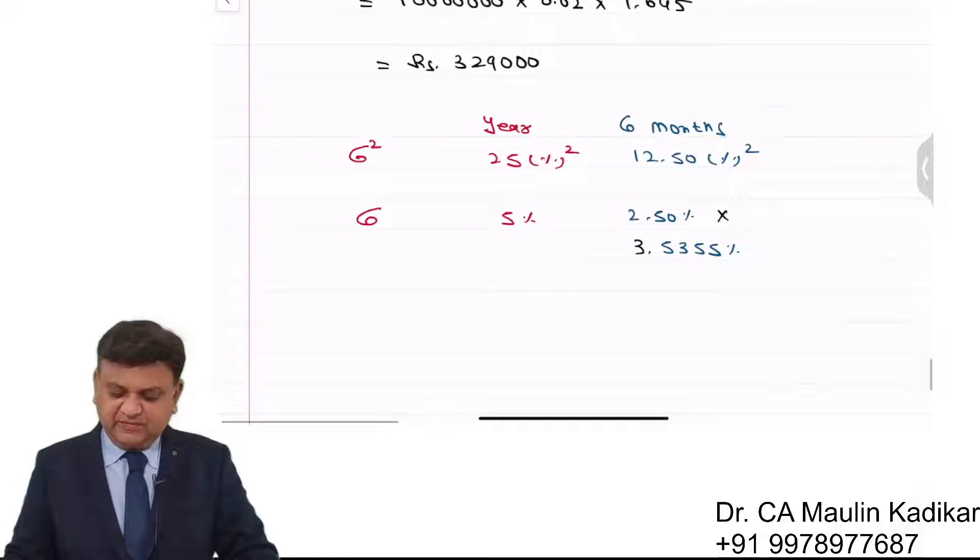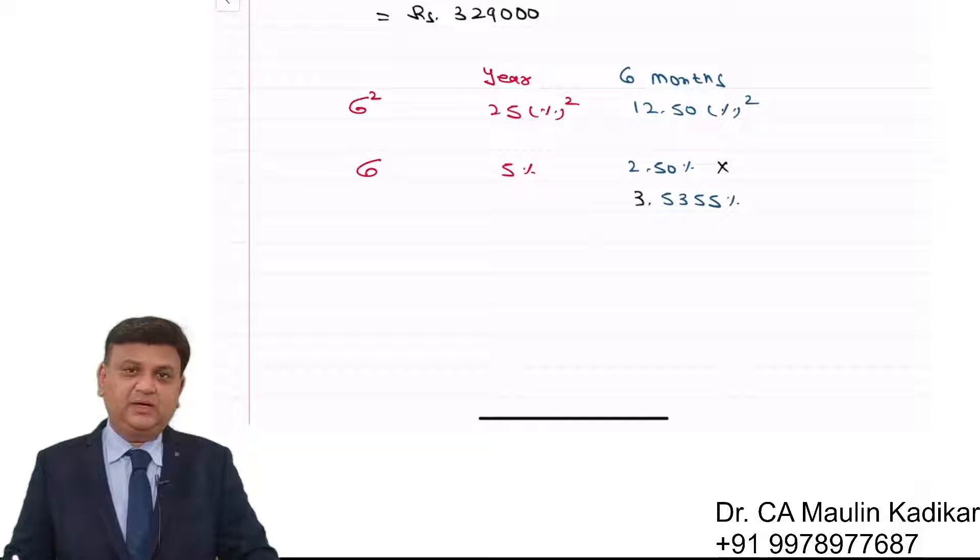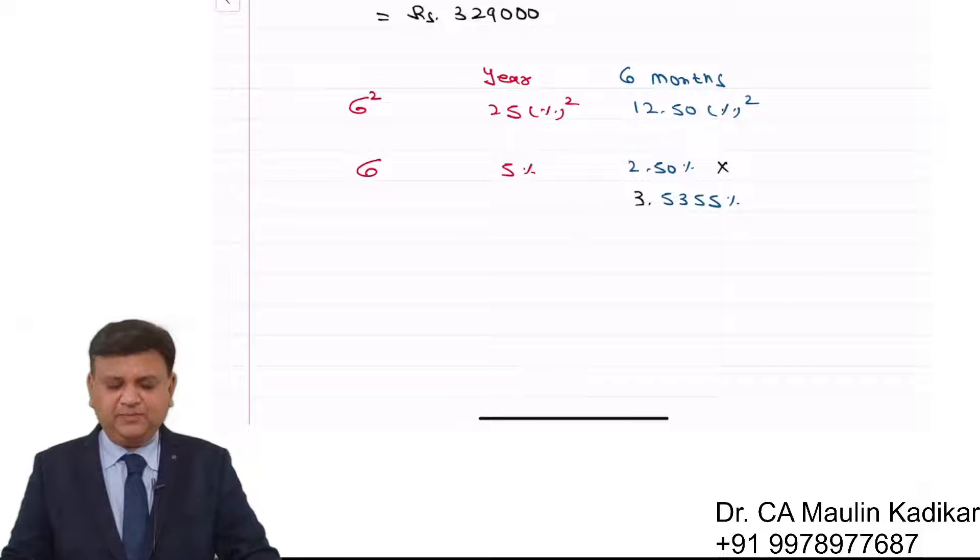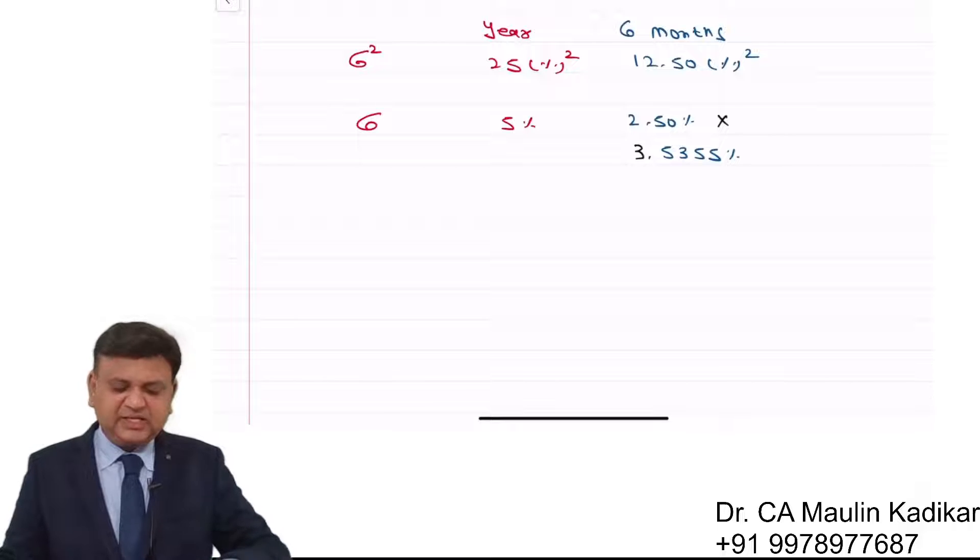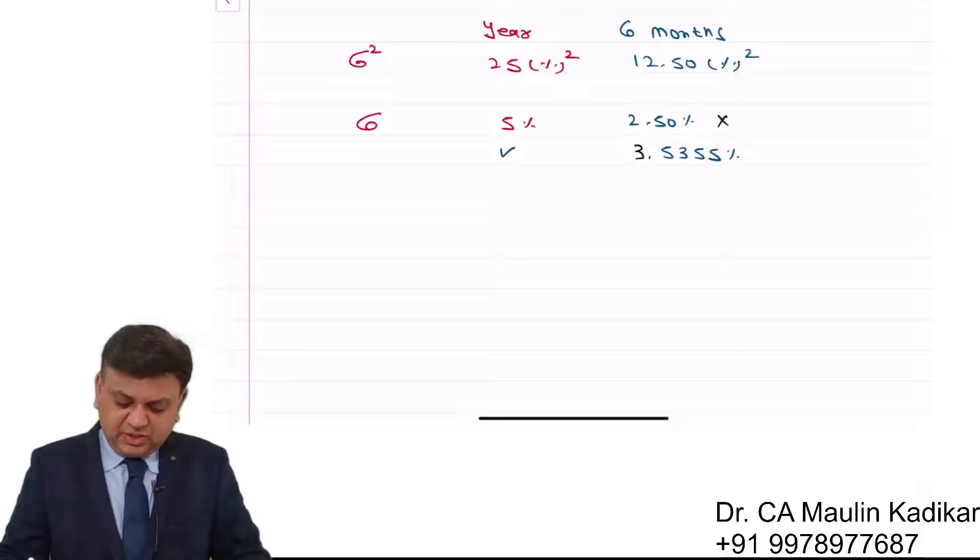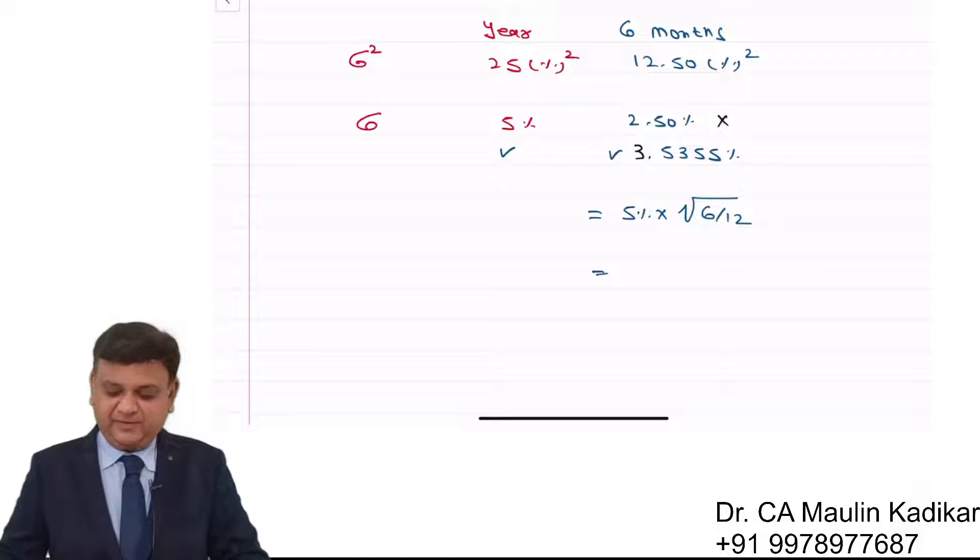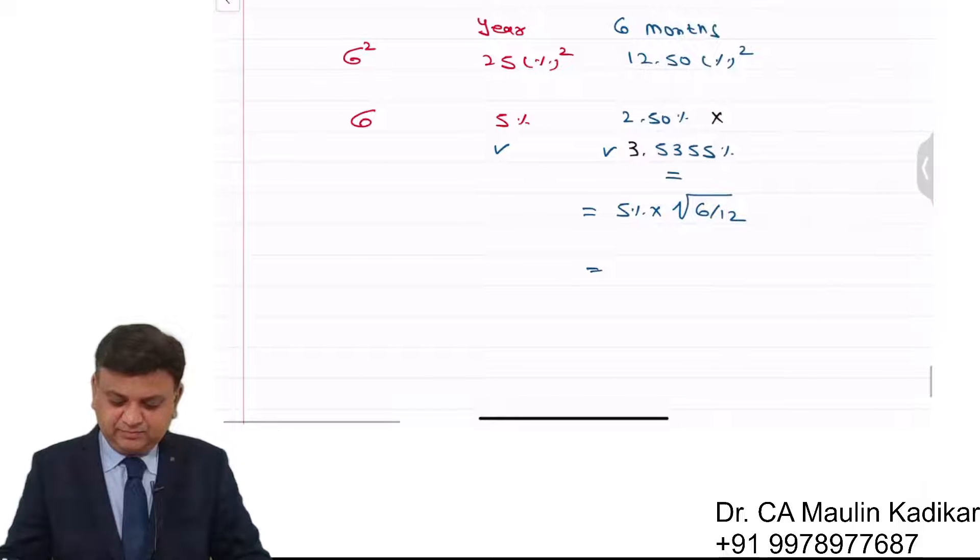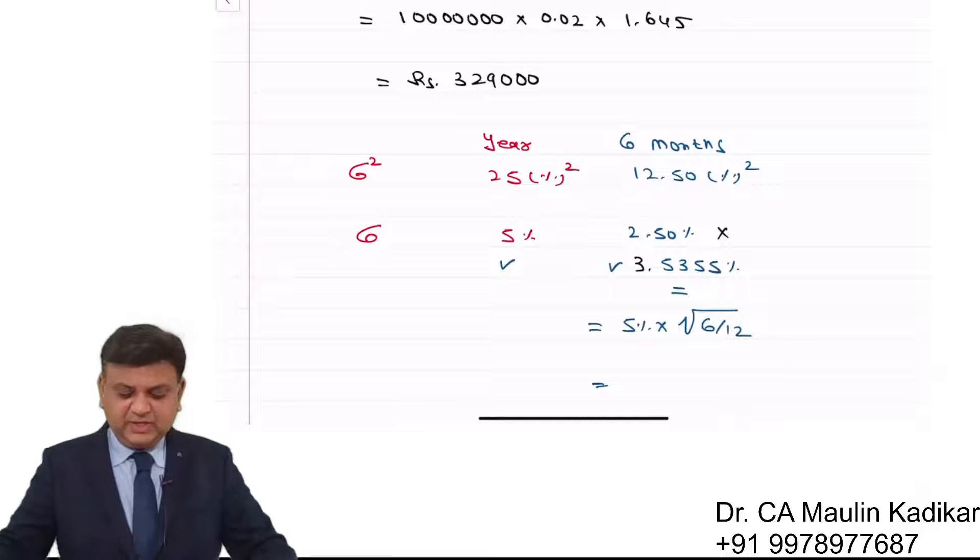If you want to find the standard deviation directly from one year to 6 months, you need to do this: 5% times the square root of 6 divided by 12. So here 6 divided by 12 is 0.5, take its root, multiply by 5, and you'll get the same answer. This is the way we make the calculation of 6-month standard deviation.